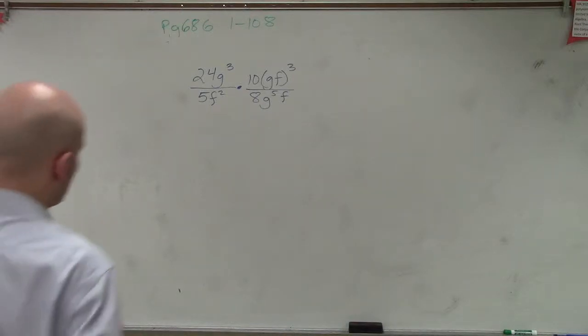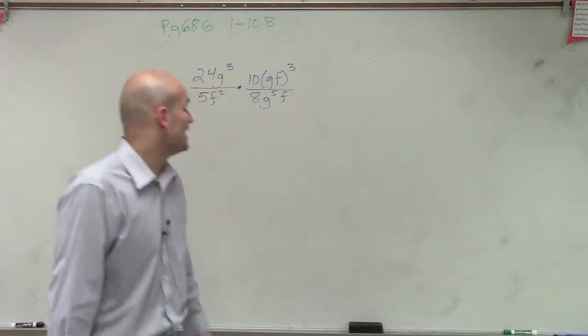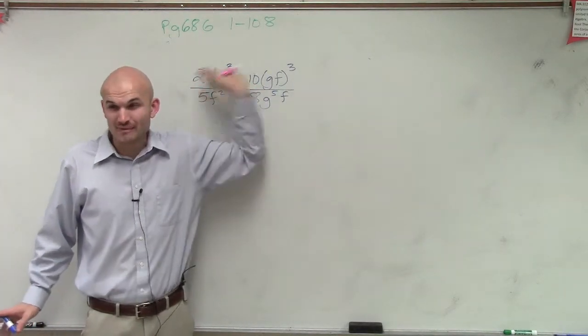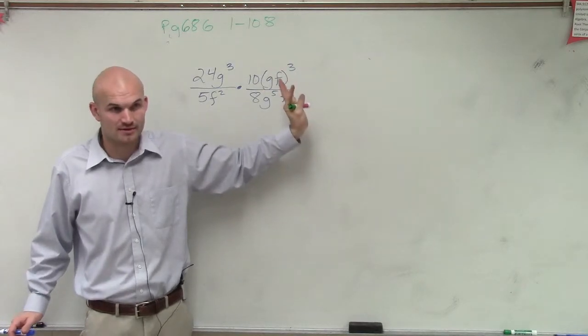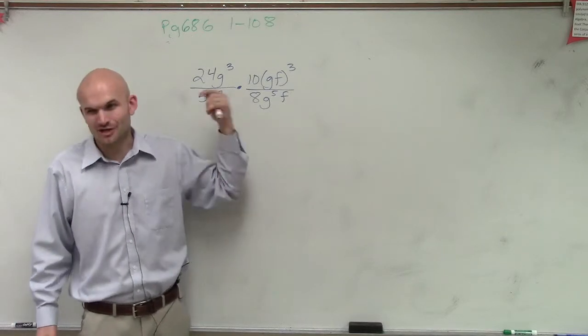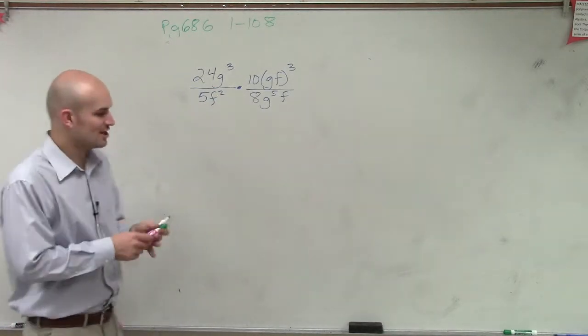So if you guys remember this last one we talked about, I said rather than multiplying all this out, we can just start eliminating stuff as the problem is, right? Because do you guys really want to do 24 times 10 and then do 5 times 8 and then start dividing it all? It's going to get a little messy, right? So let's just start seeing this.